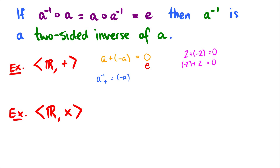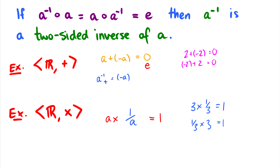What about under multiplication? The identity element for multiplication is one, so we need A times something to equal one. If we multiply A by one over A, we get one back. More concretely, three multiplied by one-third, or one-third multiplied by three, equals one. So one-third is the inverse of three under multiplication, and three is the inverse of one-third. In general, A_inverse for multiplication equals one divided by A.